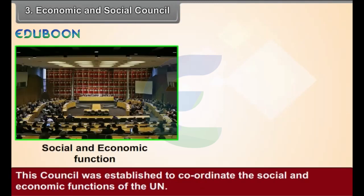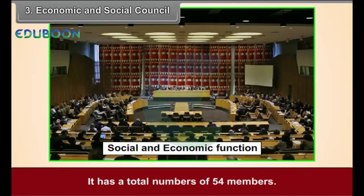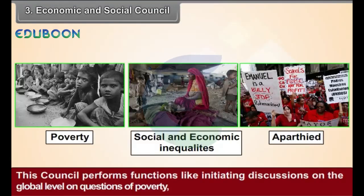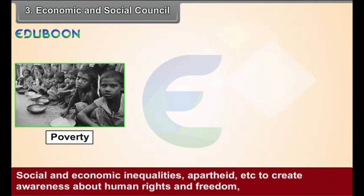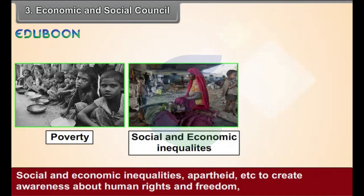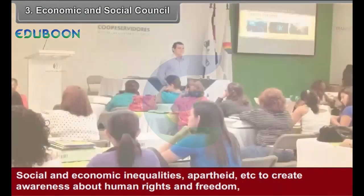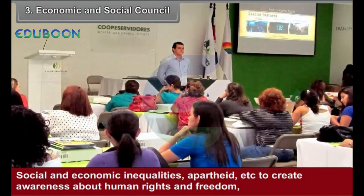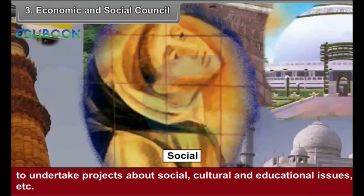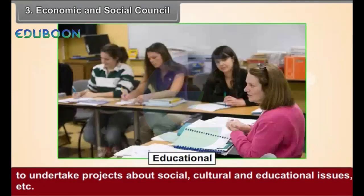Economic and Social Council — Structure: This Council was established to coordinate the social and economic functions of the UN. It has a total number of 54 members. Functions: This Council performs functions like initiating discussions on the global level on questions of poverty, social and economic inequalities, and apartheid; creating awareness about human rights and freedom; and undertaking projects about social, cultural, and educational issues.